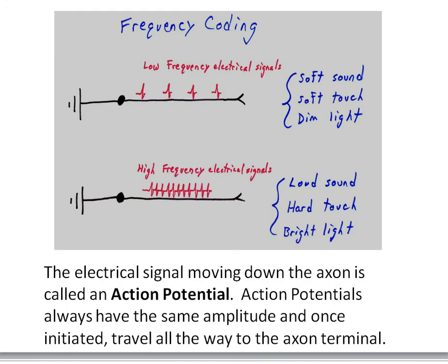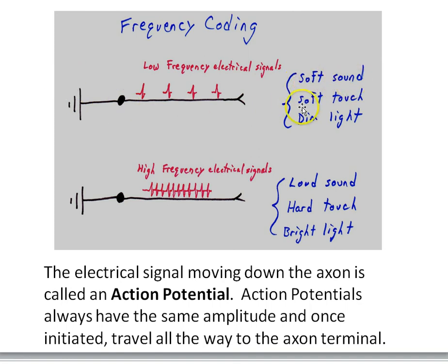The second type of coding is frequency coding. Remember that neurons generate action potentials — we can measure the frequency of those action potentials. Neurons can generate higher frequency action potentials when the stimulus is of greater intensity. So if a sensory neuron is generating low frequency electrical signals, the input to that neuron could represent a soft sound, or a soft touch, or a dim light. If this sensory neuron is generating high frequency action potentials, that would represent a loud sound if it were in the auditory nerve, a hard touch in the tactile system, or a bright light in the optic nerve.